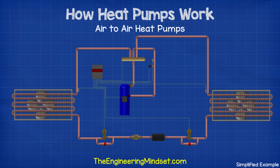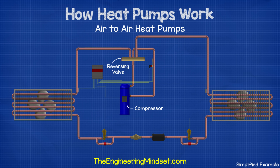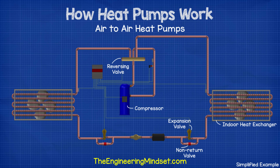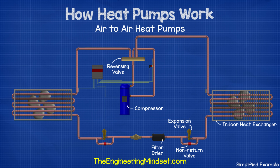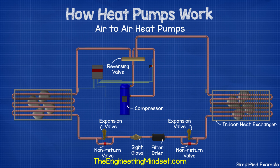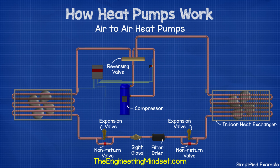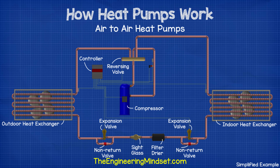The main components in this type of system are the compressor, the reversing valve, the indoor heat exchanger, an expansion valve with a non-return valve bypass, a bi-directional filter dryer, a sight glass, another expansion valve with a non-return valve and bypass, and then the outdoor heat exchanger. We also have a controller and a number of temperature and pressure sensors around the system.